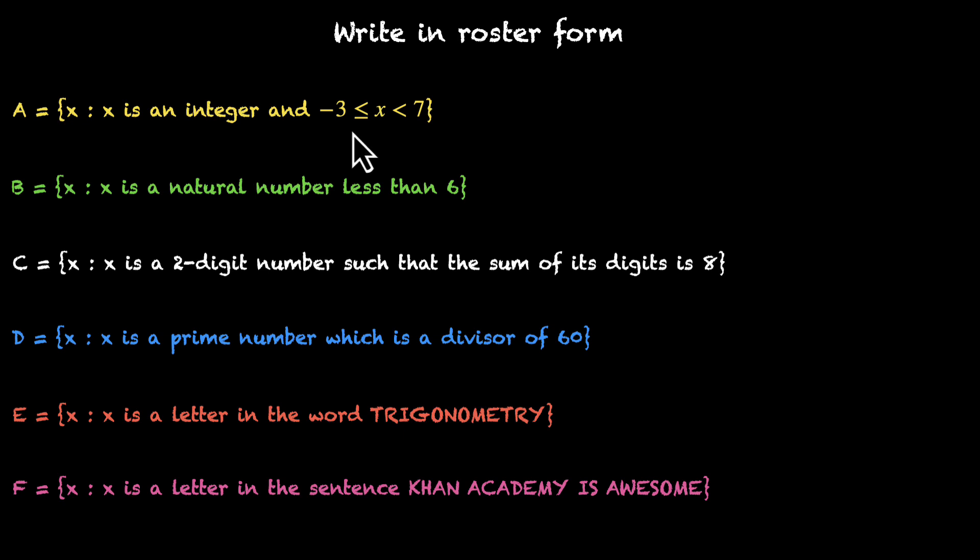We want to have integers starting from minus 3. So this is what we have: -3, -2, -1, 0, 1, 2, 3, 4, 5, and 6. We don't have 7. That's the answer for this question. This is how we write this set in the roster form.